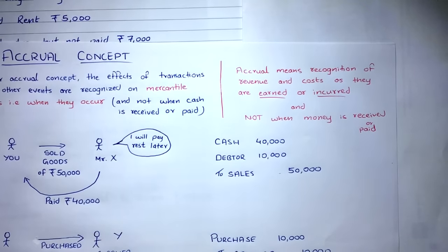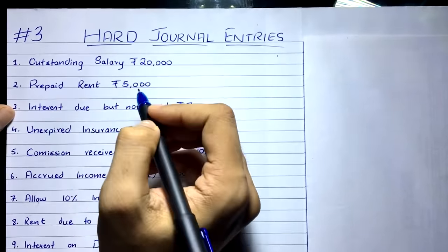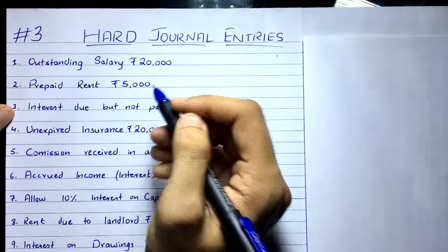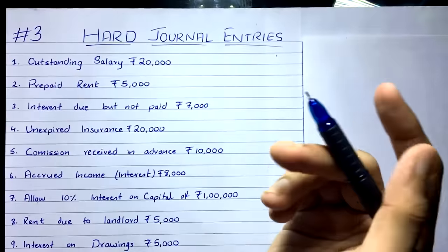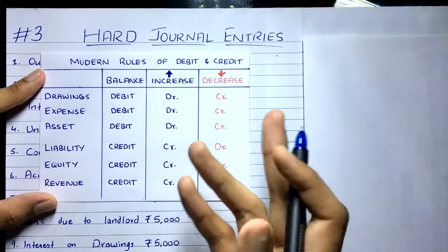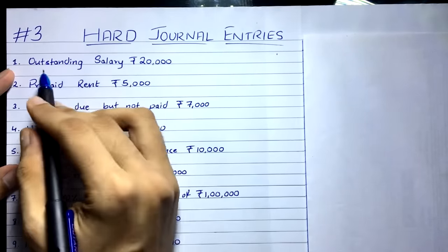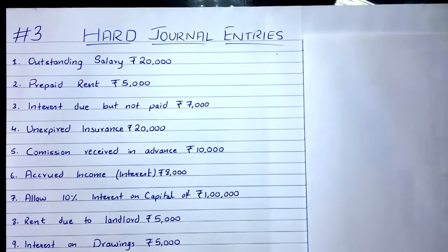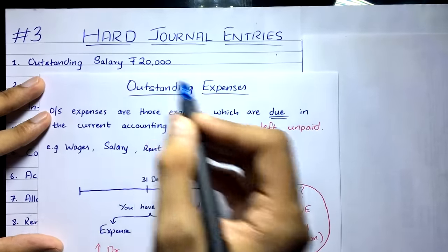Now let's look at the first transaction: outstanding salary of 20,000. To pass a general entry, first understand the transaction, then identify the two accounts affected, categorize them — expense, asset, or liability — see whether they are increasing or decreasing, and apply the rules of debit and credit. Outstanding salary means you haven't paid the salary yet — it's an outstanding expense.